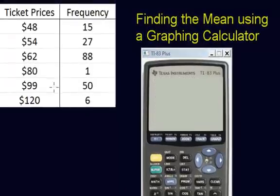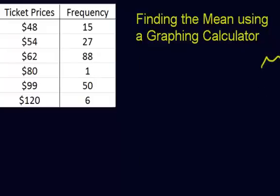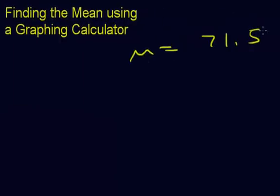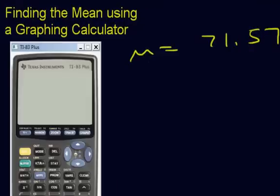Okay, we have the second example up. This example we had ticket prices. I went around and asked a bunch of people at a concert, what did you pay for your ticket? And I put it in this nice little organized frequency distribution. I think our mean is supposed to be 71.57. That's what we should get. So let's see if it works out.